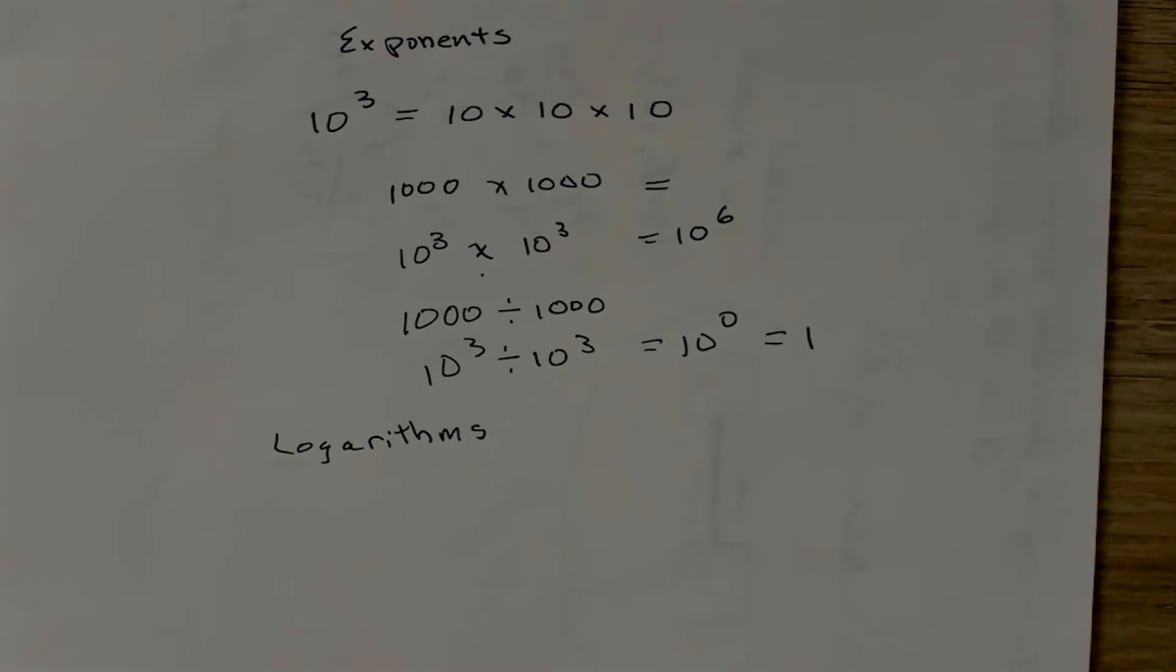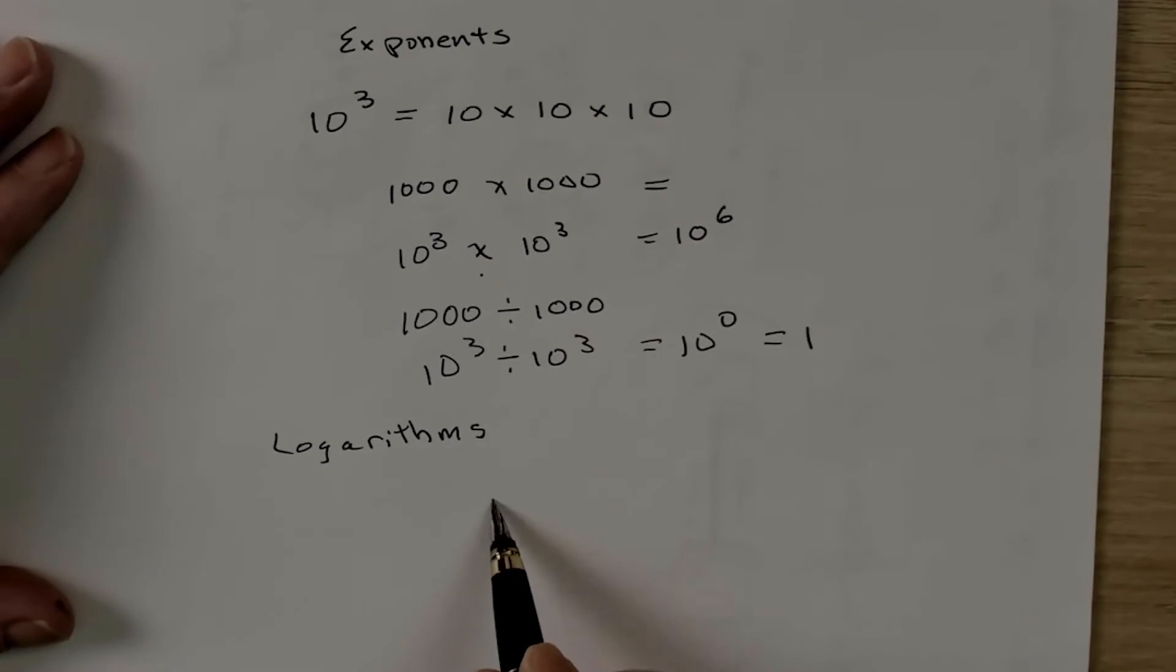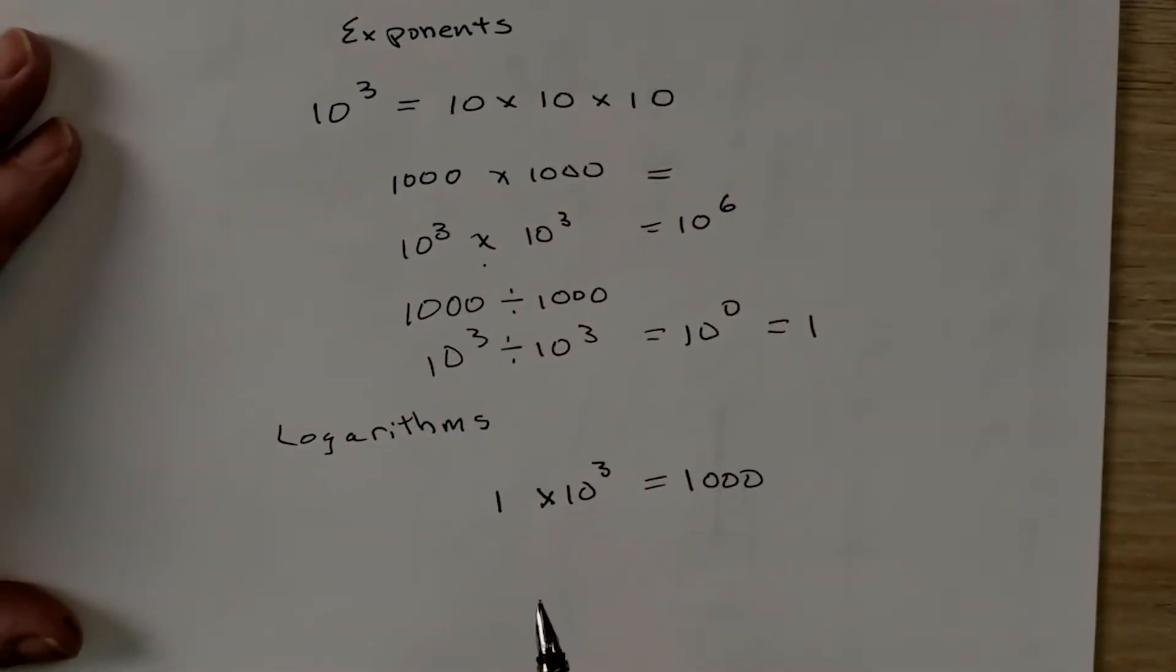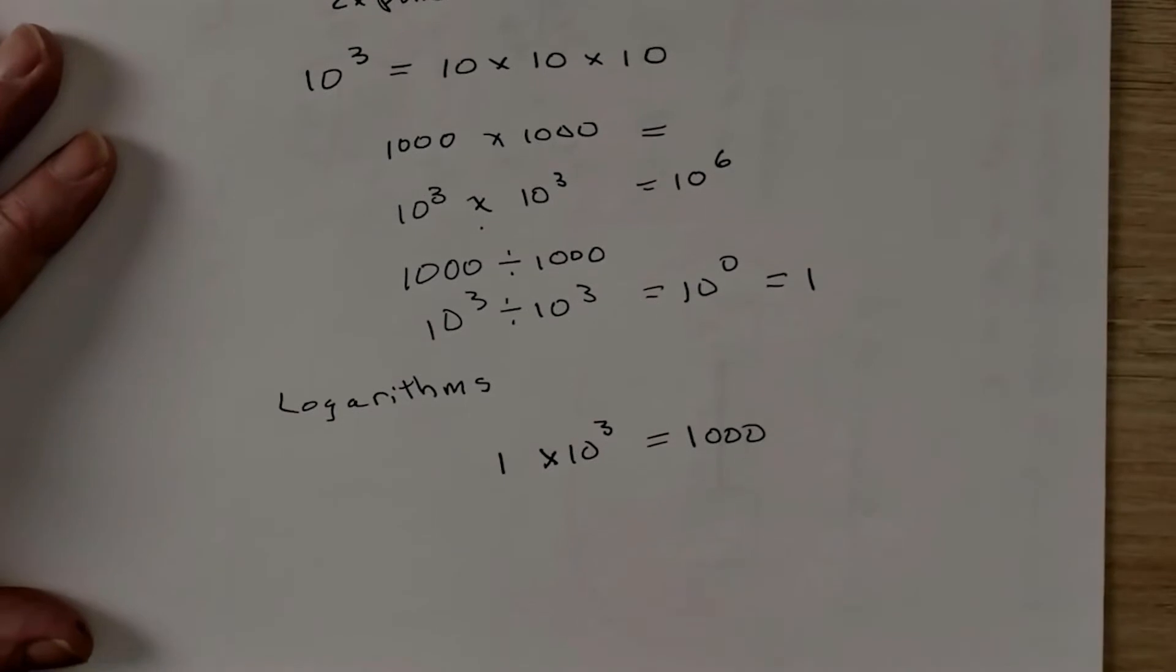Now the next concept is the concept of what we call logarithms. So we know that 1 times 10 to the 3 equals 1,000. We just saw that up here. Now, can we express this with something called a logarithm? Yes, we can. And the way we denote that is we write log. Then we take the base of our exponent, and we make that the base of the log. Then we take the number, which is 1,000, equals the exponent.